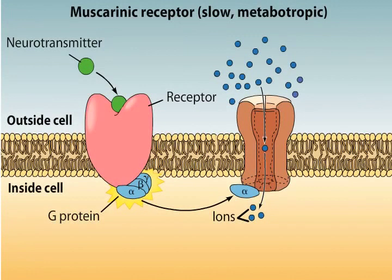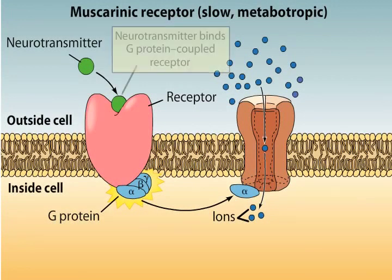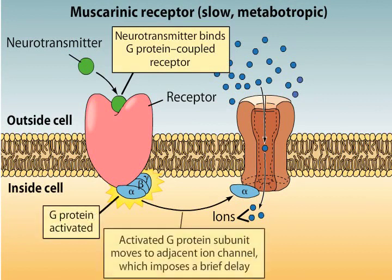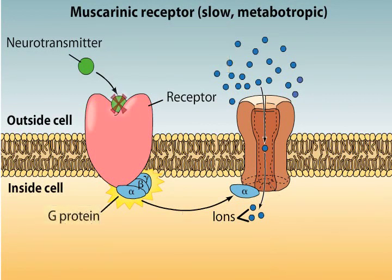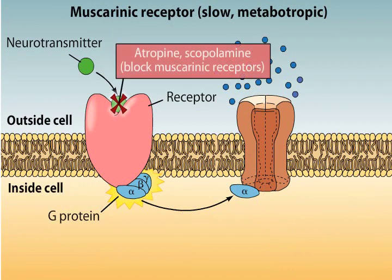Muscarinic receptors are G-protein coupled metabotropic receptors, so they have slower responses when activated and they can be either excitatory or inhibitory. Muscarinic receptors can be blocked by the drugs atropine or scopolamine.